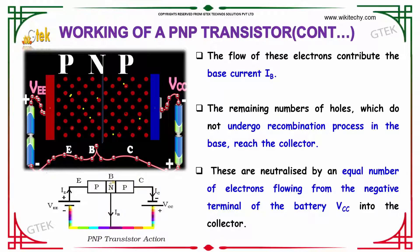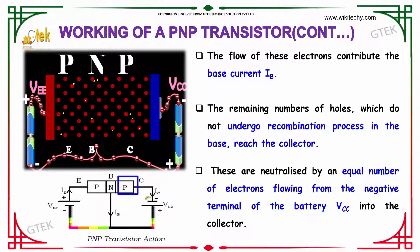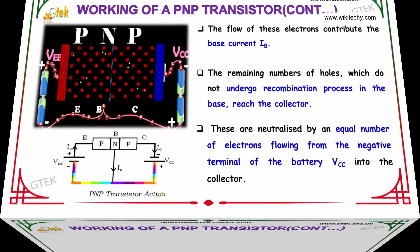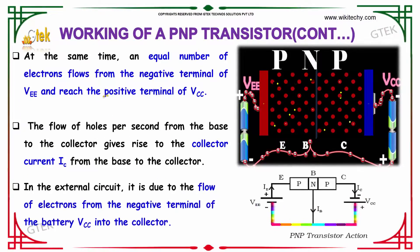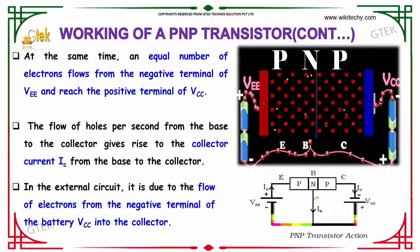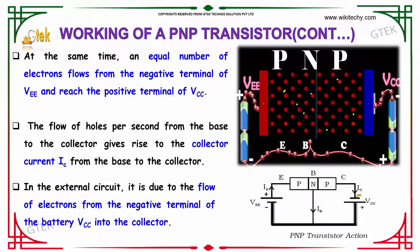The remaining holes which do not undergo recombination in the base reach the collector. They are neutralized by an equal number of electrons flowing from the negative terminal of battery VCC into the collector. At the same time, an equal number of electrons flow from the negative terminal of VEE and reach the positive terminal of VCC. The flow of holes from the base to the collector gives rise to the collector current IC, which in the external circuit is due to the flow of electrons from the negative terminal of VCC into the collector.